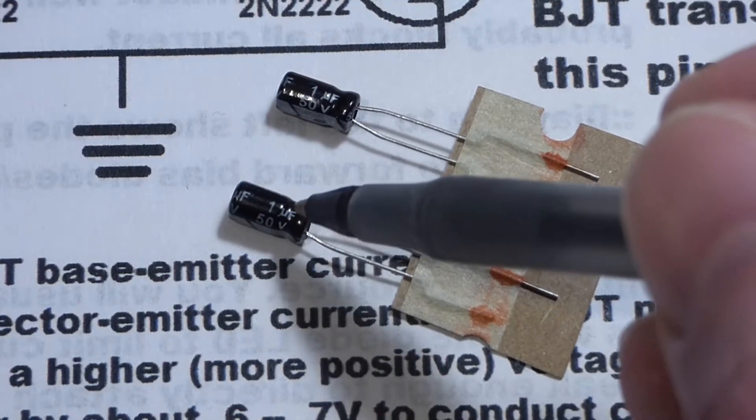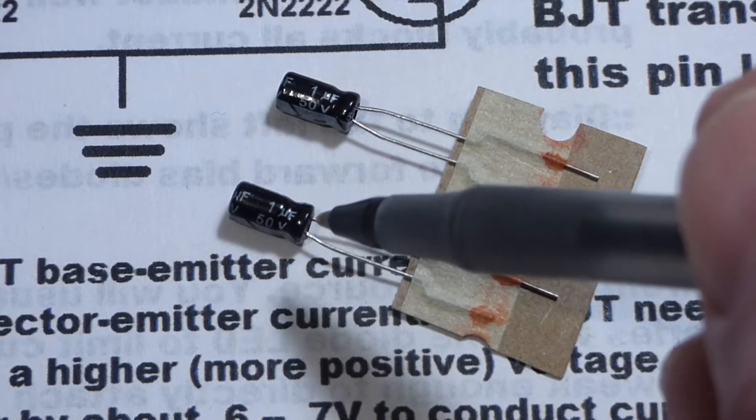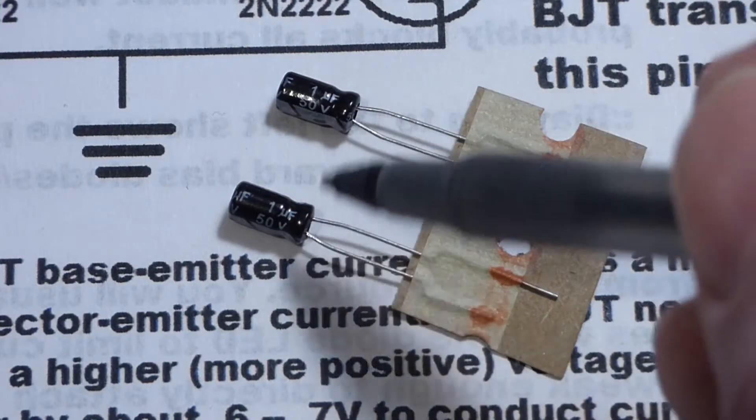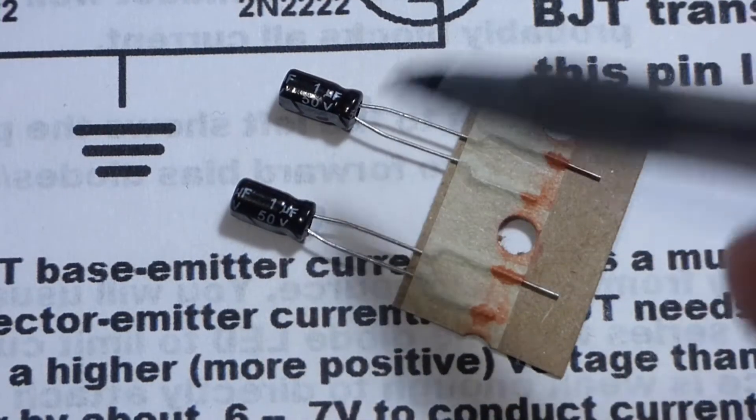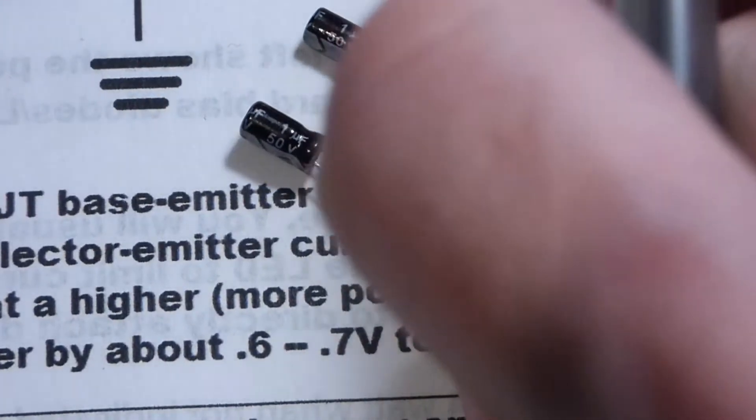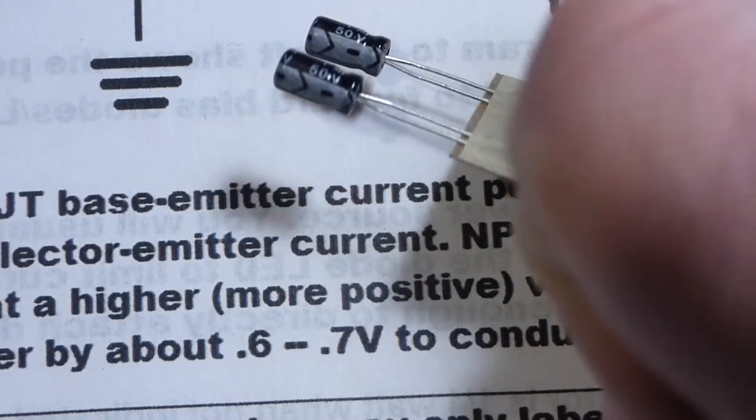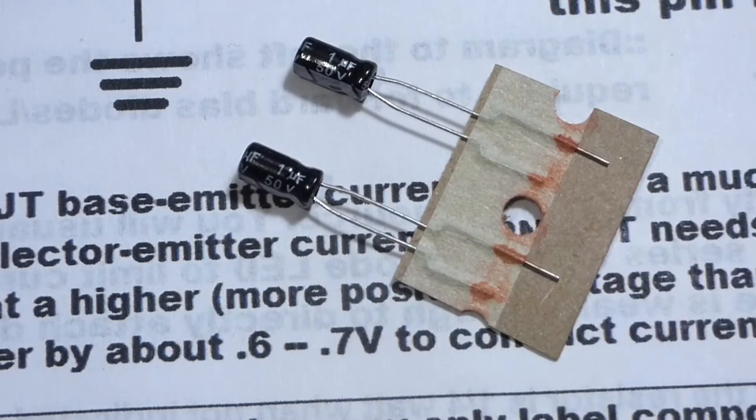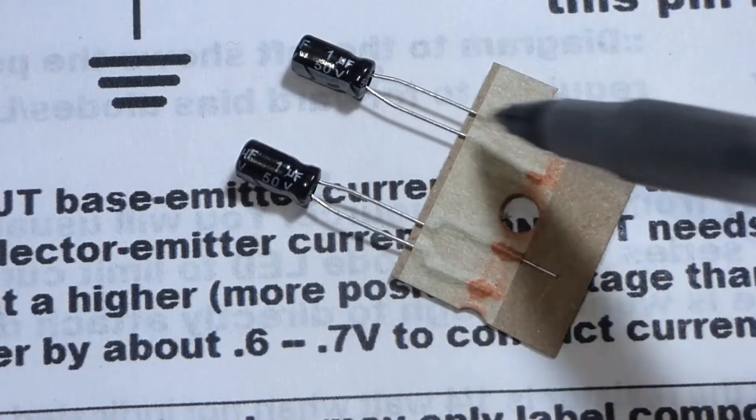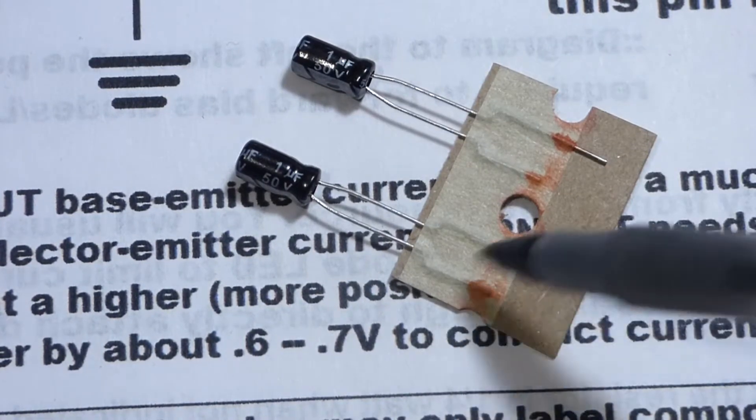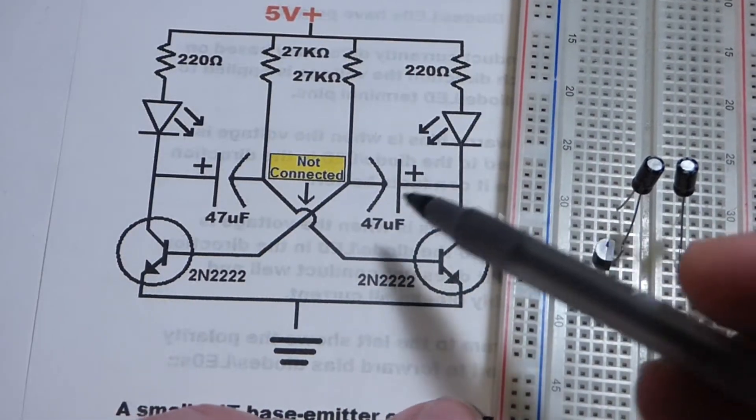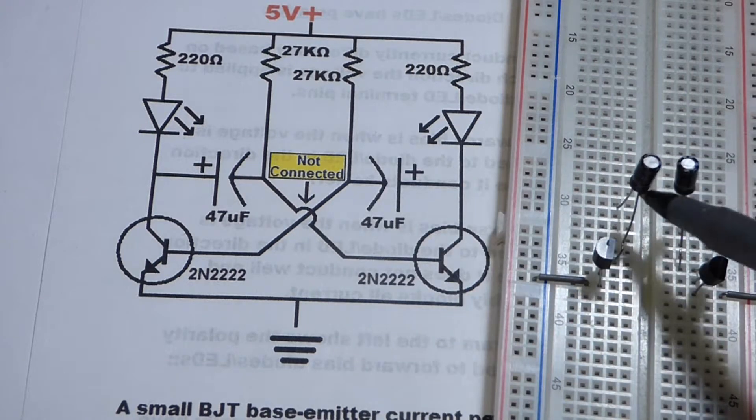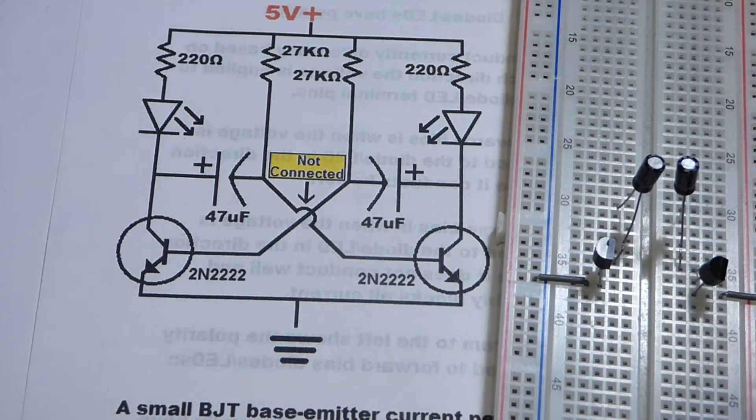Zooming in on the component you can see right there it says 1 microfarad. That's mu, it looks like the letter U but it's the Greek letter mu. There's also 50 volt. This is electrolytic, it's polarized. The side with the dash needs to be more negative and the side without the dash needs to be more positive. It also has a longer lead on the positive side.